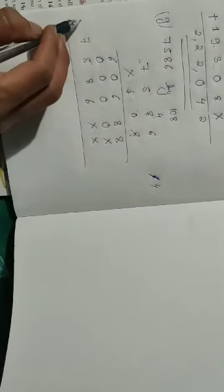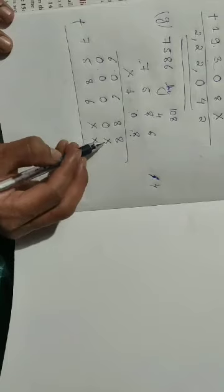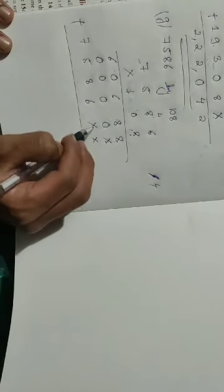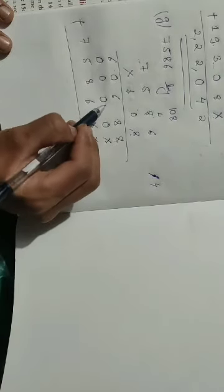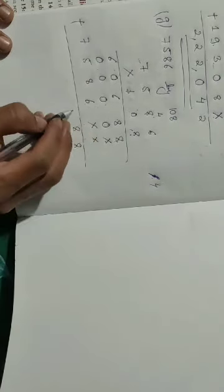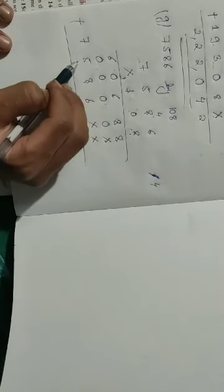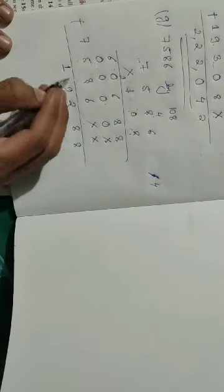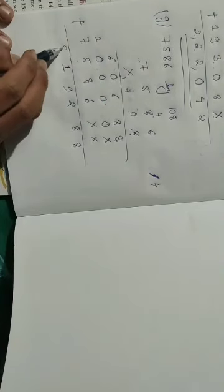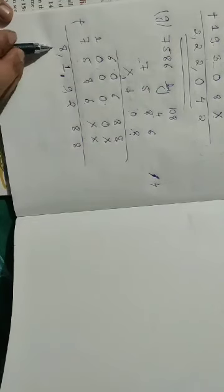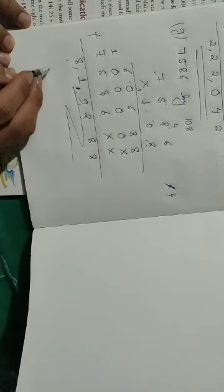Now we add all three rows. Remember the cross means 0. So: 8 plus 0 plus 0 is 8. 8 plus 0 plus 0 is 8. 6 plus 0 plus 6 is 12, carry over 1. 0 plus 0 plus 5 plus 1 is 6. 6 plus 1 is 7, carry over 1. Then 8 plus 1 is 9. So the answer is 819,288.